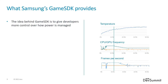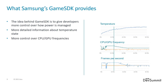What we wanted to do with Game SDK was to give game developers more control over how power is managed. First, we give more detailed information about the temperature state and flag when the game needs to take action. Second, we allow the game to have more control over the CPU and GPU frequencies — it's still important to keep these as low as possible to extend battery life. Third, we provide more information about frame timing to help understand where the bottlenecks are.